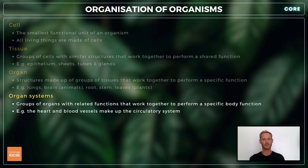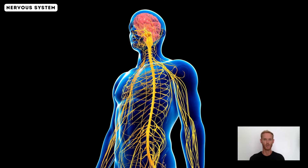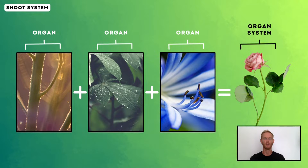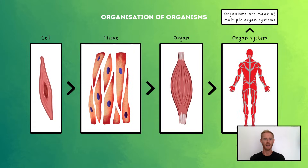Next, organ systems are groups of organs with related functions that work together to perform a specific body function. For example, the heart and blood vessels make up the circulatory system; the brain, spinal cord and nerves make up the nervous system; and in plants, the stem, leaves and reproductive parts make up the shoot system, which we'll return to in chapter 8. Finally, an organism is a complete living thing made up of multiple organ systems. Organisms can survive independently and exhibit the properties of life.